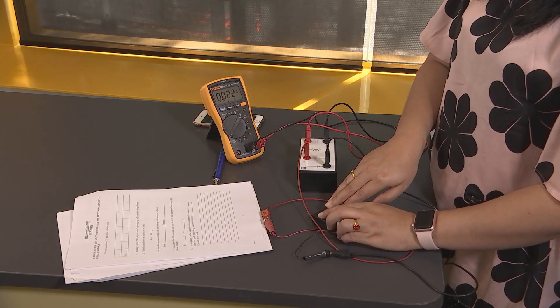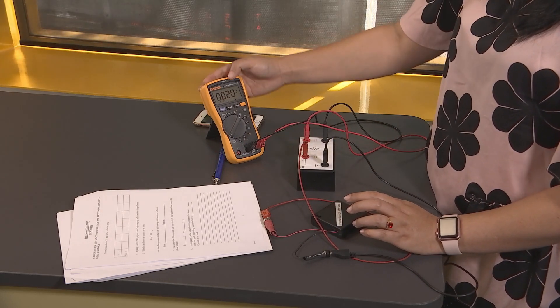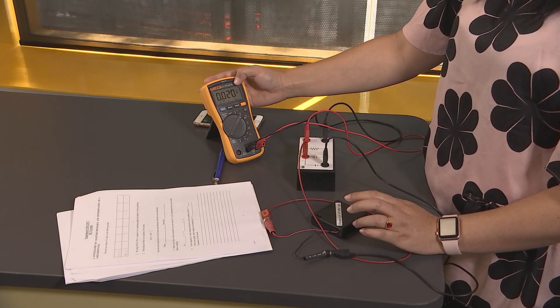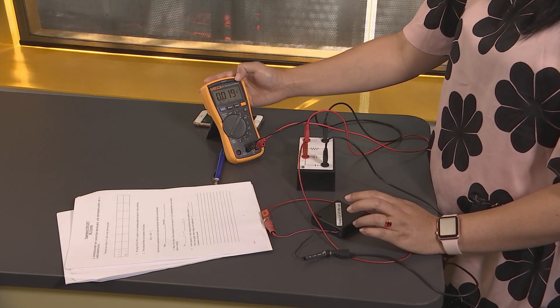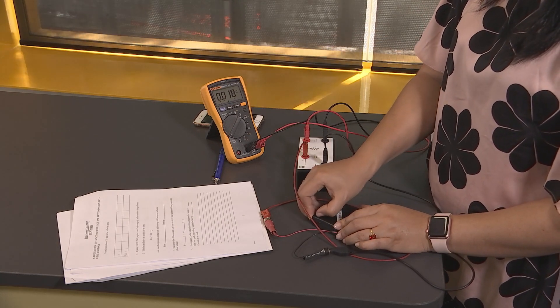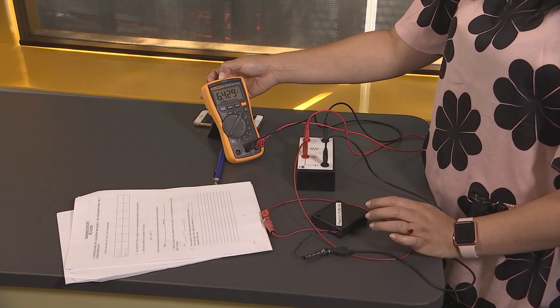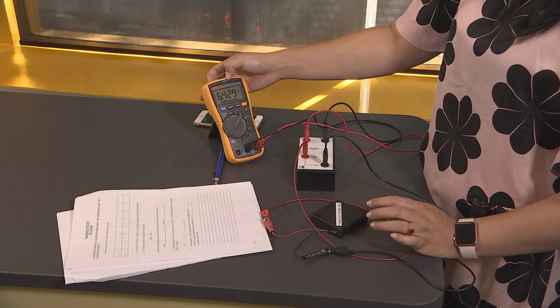Since the power supply is off, we can see the voltage across the capacitor is quite low, 0.020 volts. So if I turn on my power supply, the capacitor will automatically charge to the full value, which is 6.429 volts.